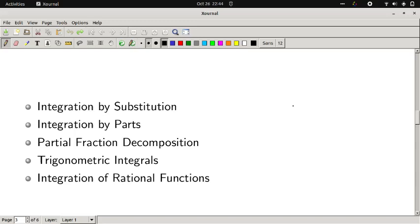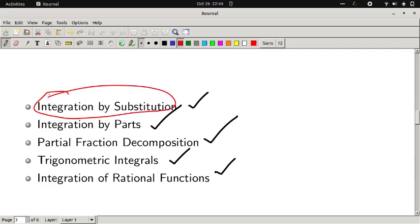First one is integration by substitution, second one is integration by parts, third one is partial fraction decomposition method, fourth one is trigonometric integrals, and finally integration of rational functions. But in this video we are going to talk about only integration by substitution, what it is and how to effectively use it.